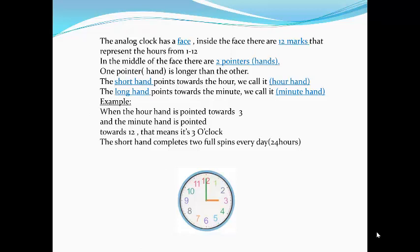One day equals how many hours? One day equals 24 hours. So the hour hand — the short one pointing to hours — must make two full spins daily to complete 24 hours, because one day equals 24 hours. These 24 hours are divided into two parts: AM, showing the morning, and PM, related to the evening and night.